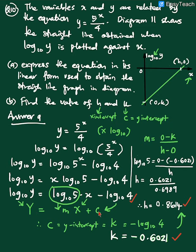So I can compare now, our Y axis, our X axis, our gradient, and our Y intercept. So now when we have our C is our Y intercept, it is actually our K from this diagram. So we got the K is equal to negative log base 10 4. So we calculate using calculator, we got negative 0.6021.